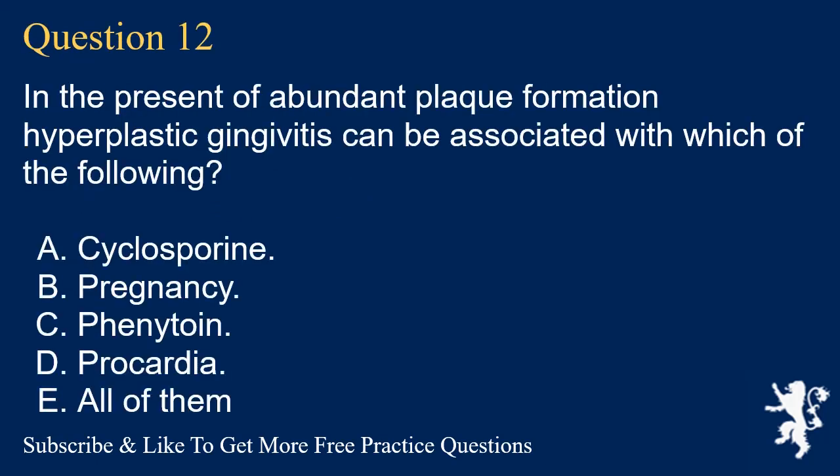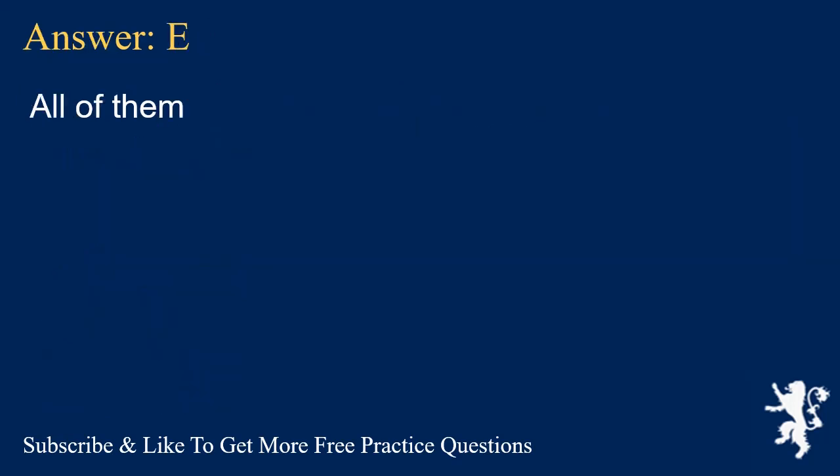Question 12. In the presence of abundant plaque formation, hyperplastic gingivitis can be associated with which of the following? A. Cyclosporin. B. Pregnancy. C. Phenytoin. D. Procardia. E. All of them. Answer: E. All of them.